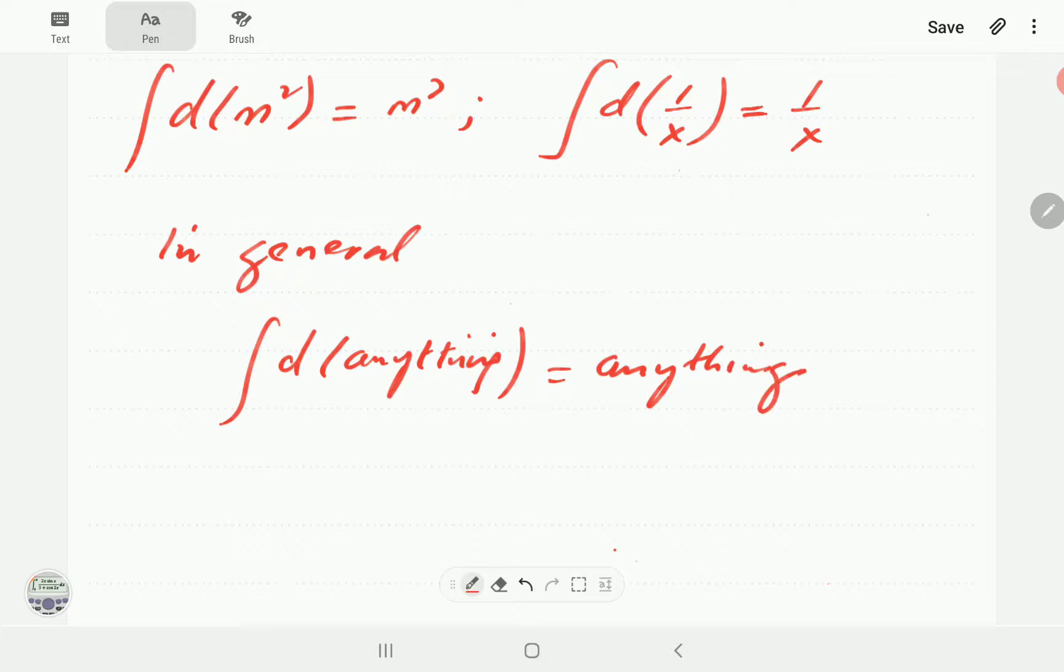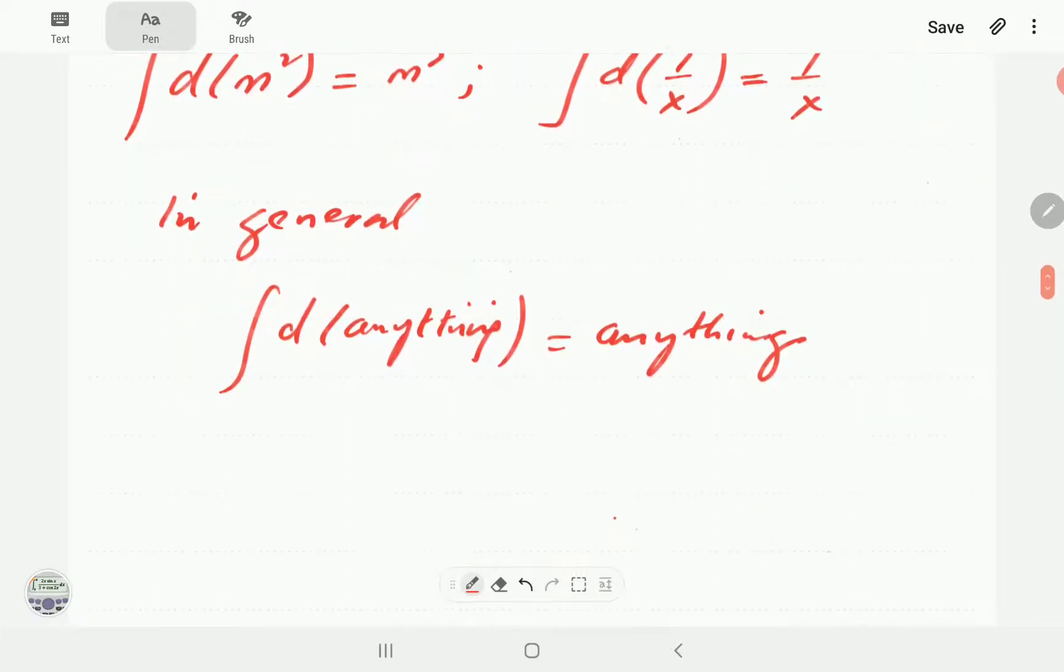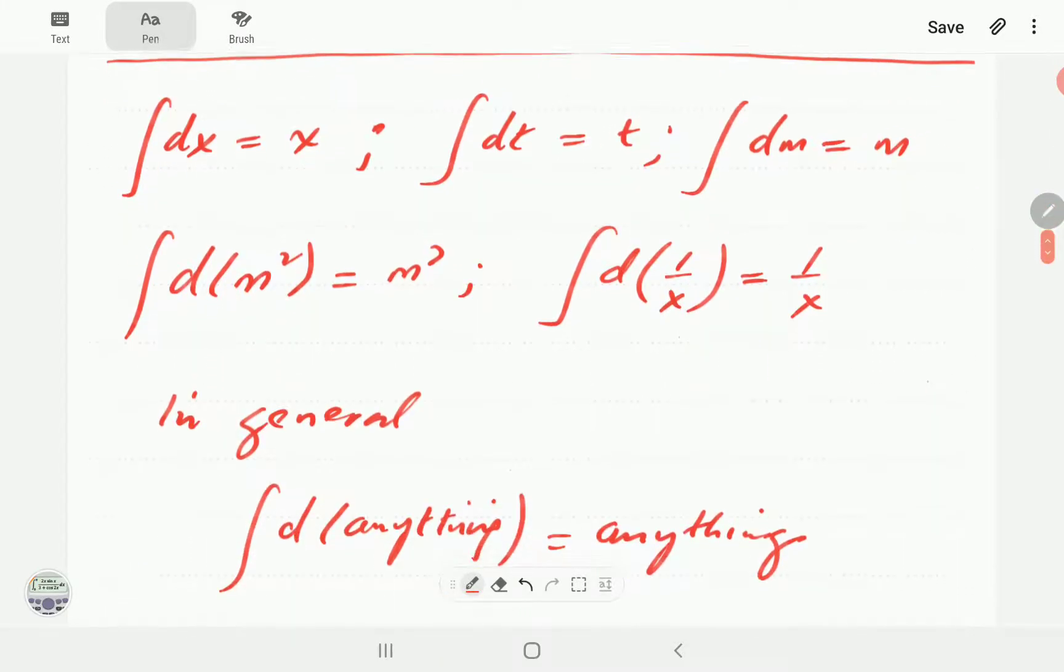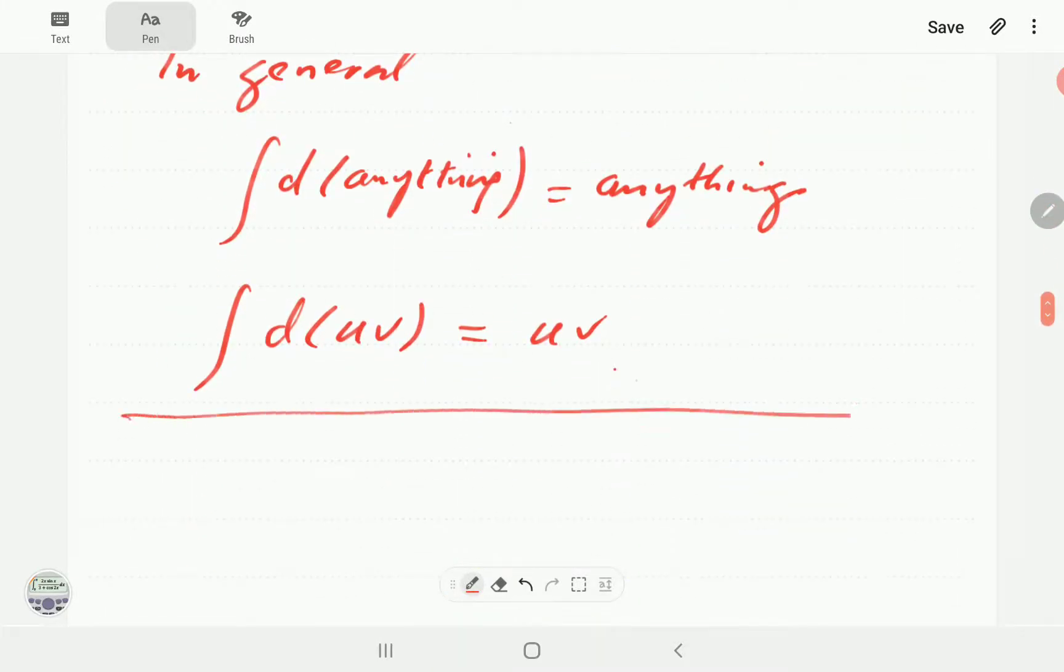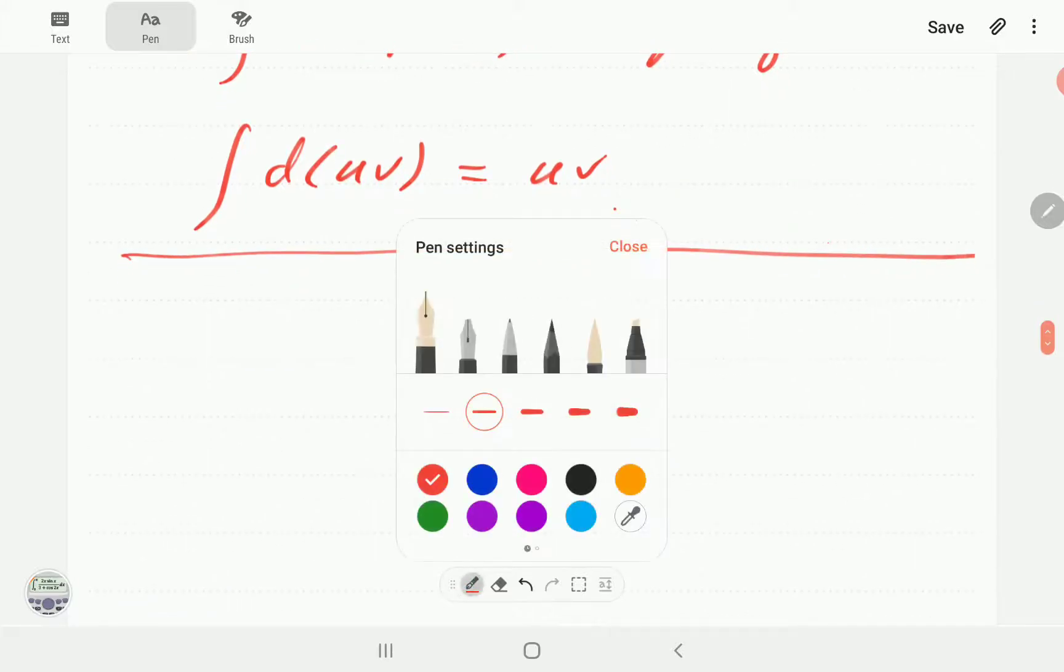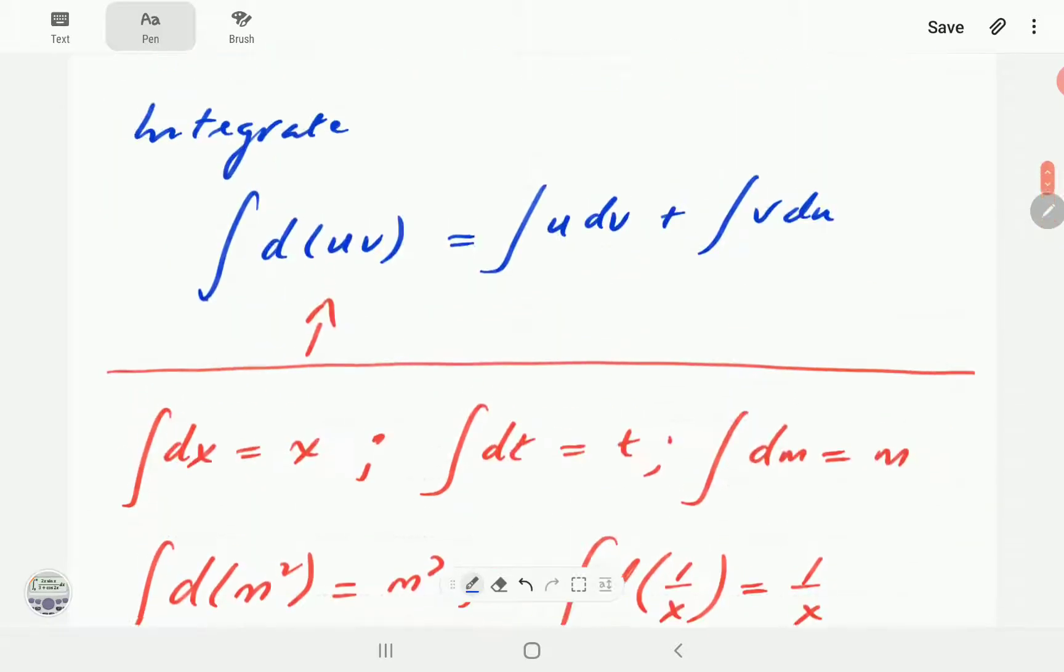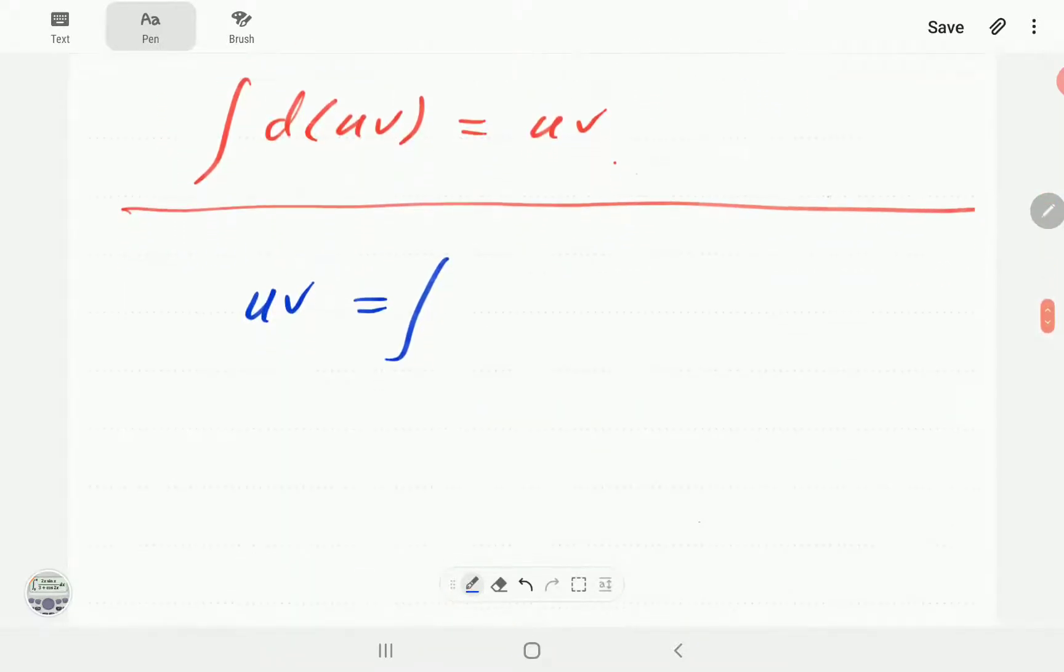Well, this means integral of d(uv) is just going to be uv. So if we go back to that formula, what we're going to have on the left hand side is uv.